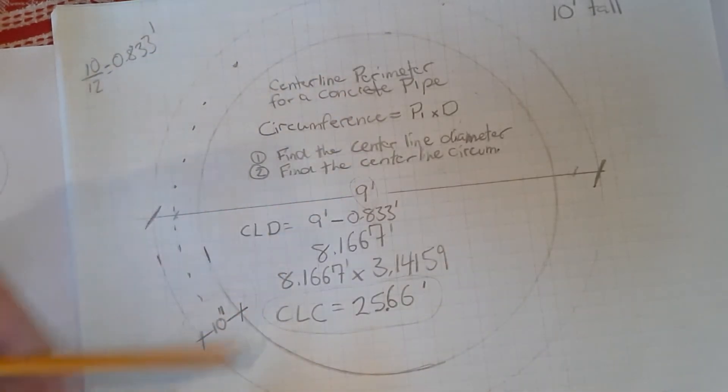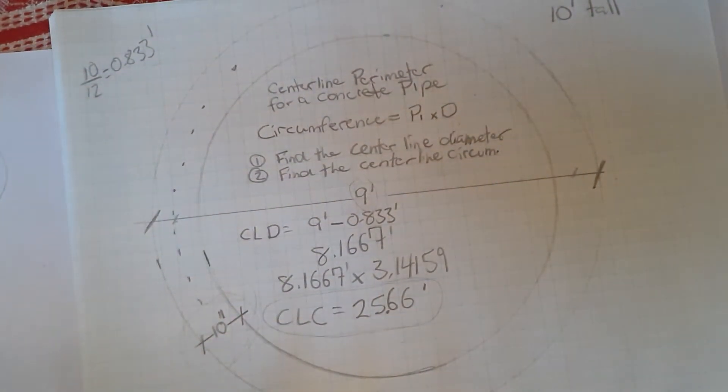Now ten inches, nine feet—we're gonna work in the same unit, so let's do ten divided by twelve, which is 0.833 feet. So ten inches will always be known from this point forward as 0.833 feet. And the last thing we need to know is that the pipe needs to be ten feet tall.